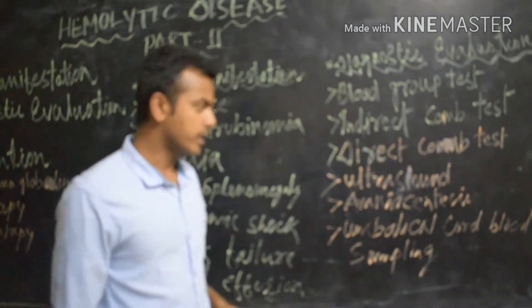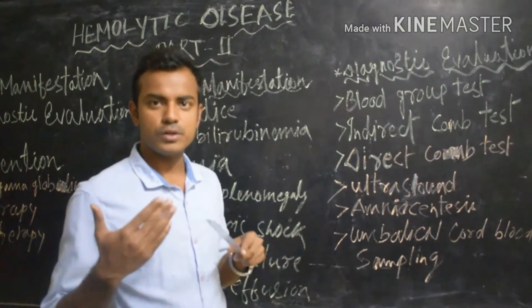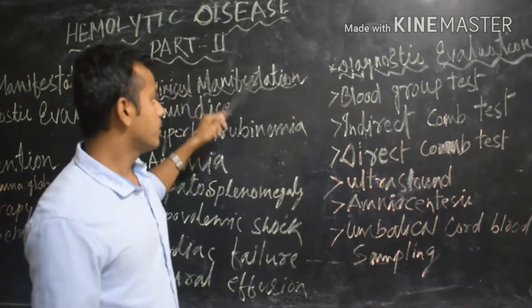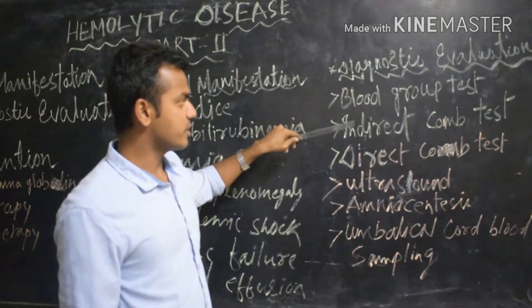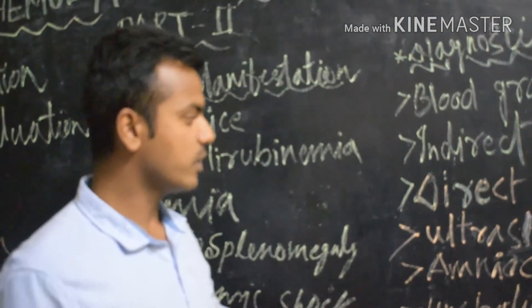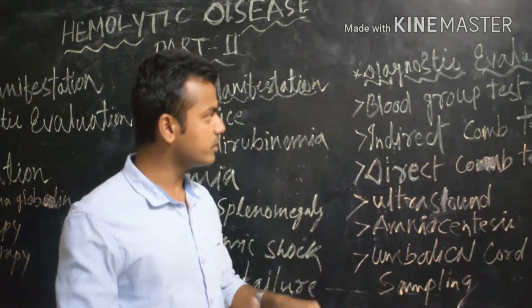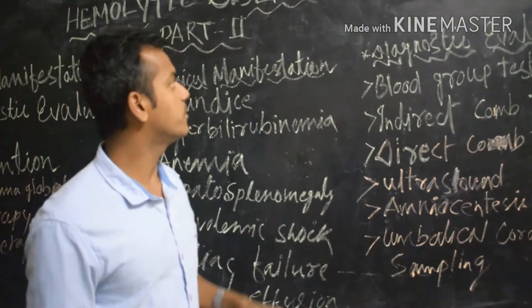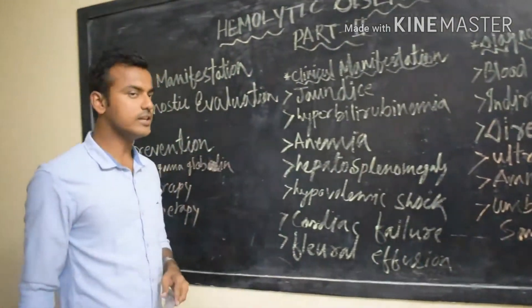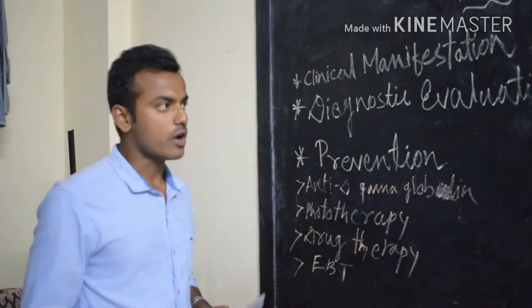Umbilical cord blood sampling involves taking a sample from the umbilical cord to analyze whether bilirubin is present in the blood or not. So the diagnostic evaluations are: blood group test, indirect Coombs test, direct Coombs test, ultrasound, amniocentesis, and umbilical cord blood sampling. By doing these tests we can determine if the baby has hemolytic disease.